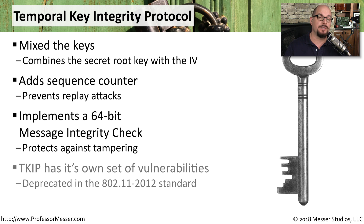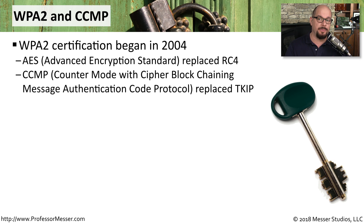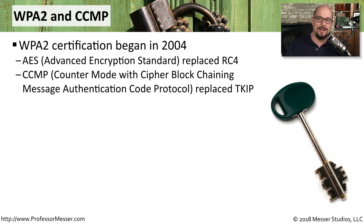Unfortunately, we found some implementation vulnerabilities with TKIP and decided this would not be appropriate to use going forward. The most modern wireless encryption we use on our networks today was introduced in 2004. This was WPA2, the second edition of Wi-Fi Protected Access. WPA2 included AES — the Advanced Encryption Standard — to provide the encryption, used instead of the RC4 cipher. It also included CCMP, which is Counter Mode with Cipher Block Chaining Message Authentication Code Protocol, and that was the replacement for TKIP.